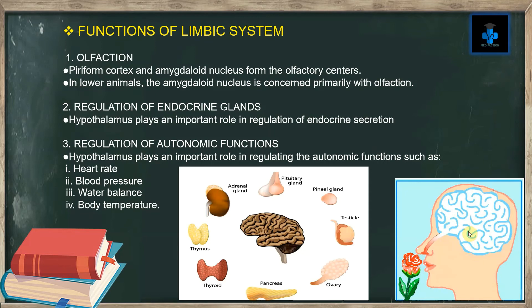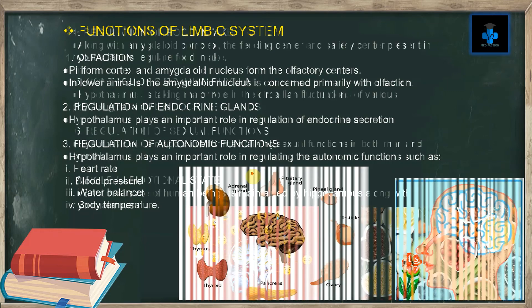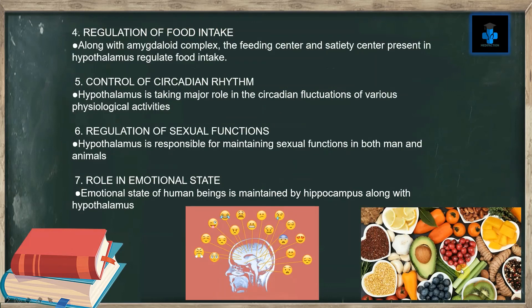Functions of the limbic system: First, olfaction — the pyriform cortex and amygdaloid nucleus form the olfactory centers; in lower animals the amygdaloid nucleus is concerned primarily with olfaction. Second, regulation of endocrine glands — the hypothalamus plays an important role in regulation of endocrine glands. Third, regulation of autonomic functions — the hypothalamus regulates autonomic functions such as heart rate, blood pressure, water balance, and body temperature. Fourth, regulation of food intake — along with the amygdaloid complex, the feeding center and satiety center present in the hypothalamus regulate food intake.